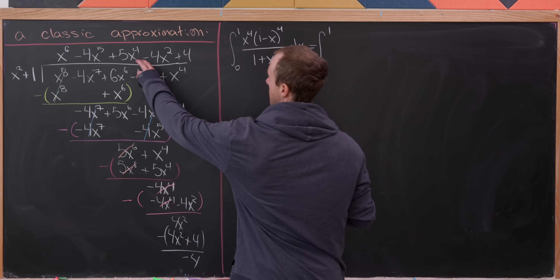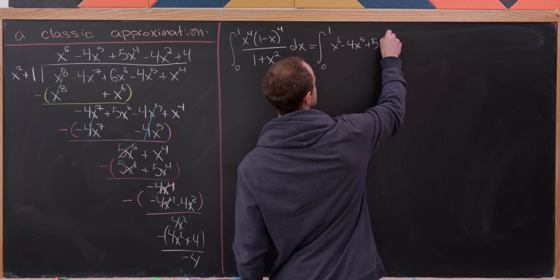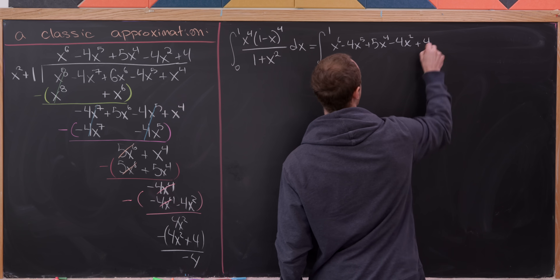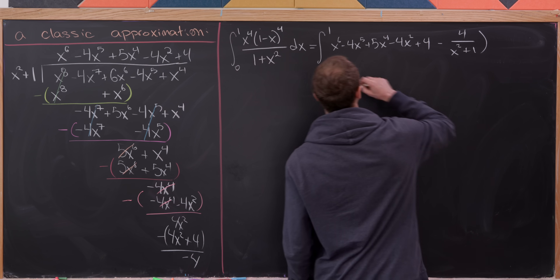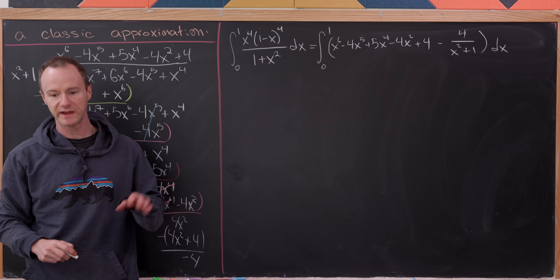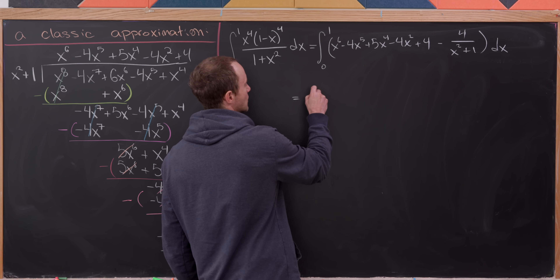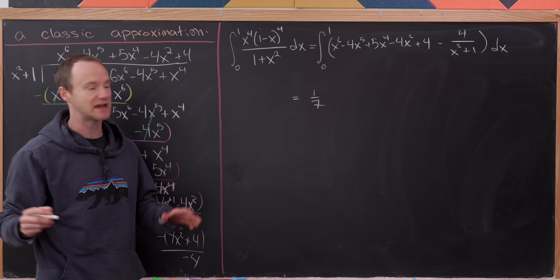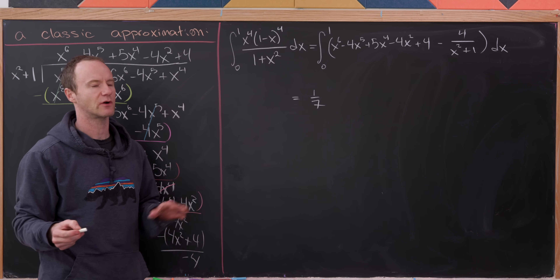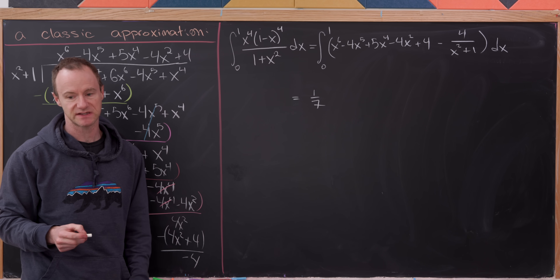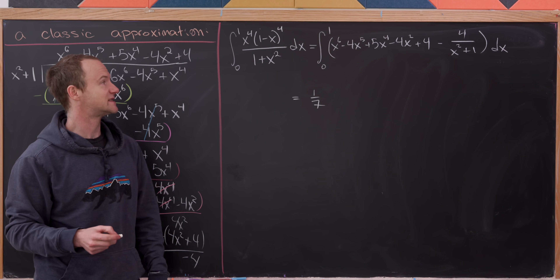Whenever you do division with a remainder, the improper fraction becomes the quotient plus the remainder over the divisor. So we have the integral from 0 to 1 of the quotient — x to the 6th minus 4x to the 5th plus 5x to the 4th minus 4x squared plus 4 — plus the remainder over the divisor, which is minus 4 over x squared plus 1. Plugging 0 into all antiderivatives gives 0, so we only need to evaluate at 1. The first term gives 1/7.